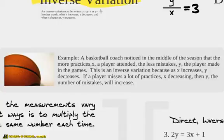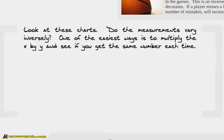So, basketball coach, notice in the middle of the season, the more practices that a player attended, the less mistakes happened in the game. This is an inverse variation because as x increases, y decreases, and if x decreases, y increases.